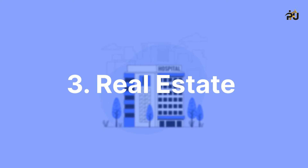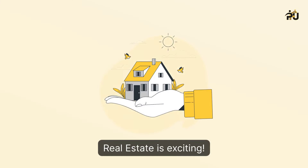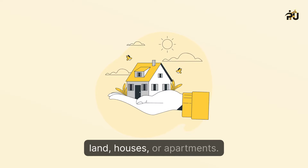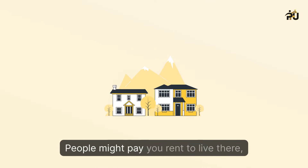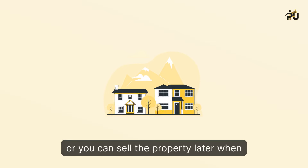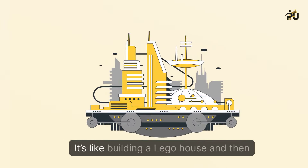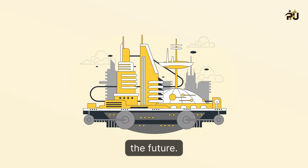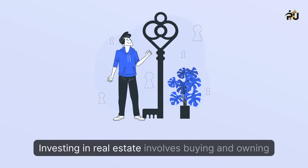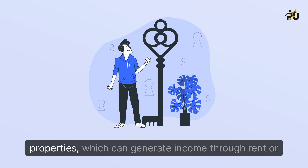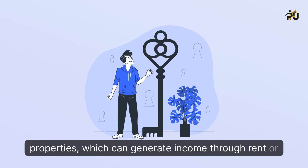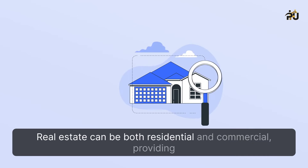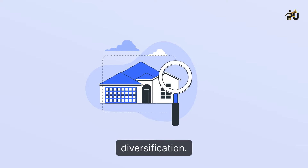3. Real Estate. Real estate is exciting. It's like playing a game where you own land, houses, or apartments. People might pay you rent to live there, or you can sell the property later when its price goes up. It's like building a Lego house and then trading it for something bigger and better in the future. Investing in real estate involves buying and owning properties, which can generate income through rent or appreciation in value. Real estate can be both residential and commercial, providing diversification.